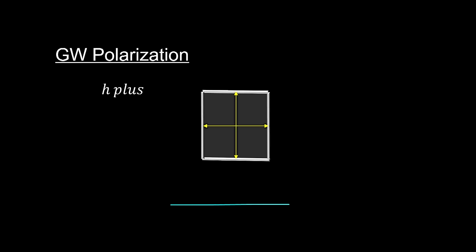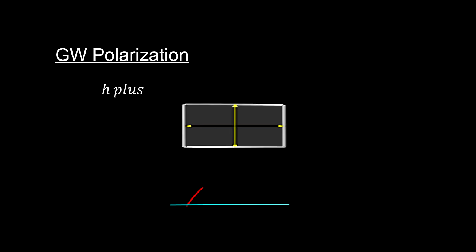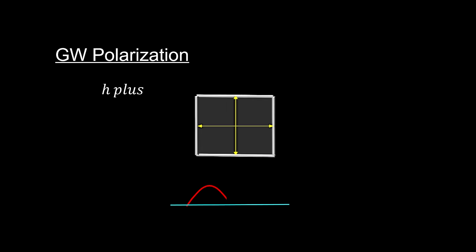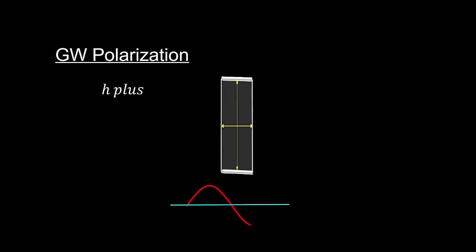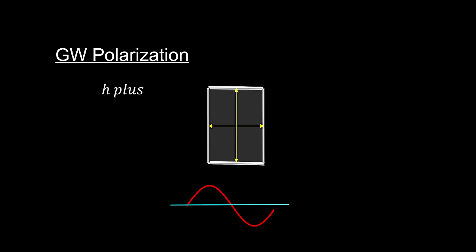Here's an exaggerated look at what an oscillating h-plus polarized gravitational wave does to a square plate it passes through. Again, the wave is passing into the page.